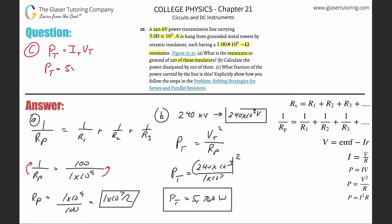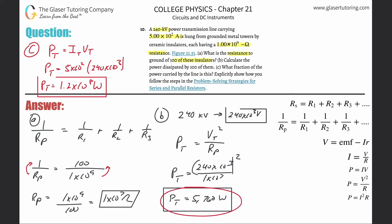Current is in amps — 5 times 10 to the 2 — and voltage needs to be in volts, so 240 times 10 to the 3rd. Multiplying: 5 times 10 to the 2, times 240, times 10 to the 3rd gives 1.2 times 10 to the 8th watts — that's the total power supplied. Now divide the dissipated power by the total: 5,760 over 1.2 times 10 to the 8th equals 4.8 times 10 to the minus 5. That's the fraction. To get the percent, multiply by 100.